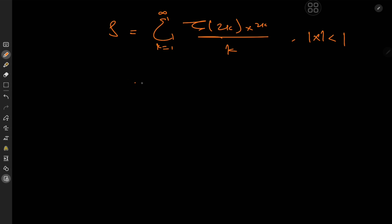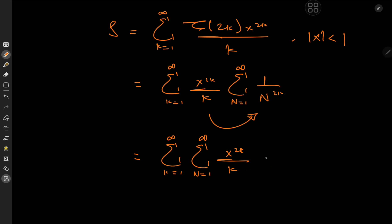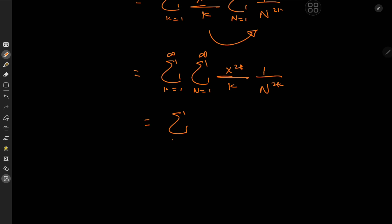The first thing I'd like to do is expand the zeta function as an infinite series. So we have the sum over k from 1 to infinity of x to the 2k over k, times the sum over n from 1 to infinity of 1 over n to the 2k. The 1/n^(2k) term is independent of k, so we take it inside the summation, giving us the sum over k and n of (1/k) times (x/n)^(2k).